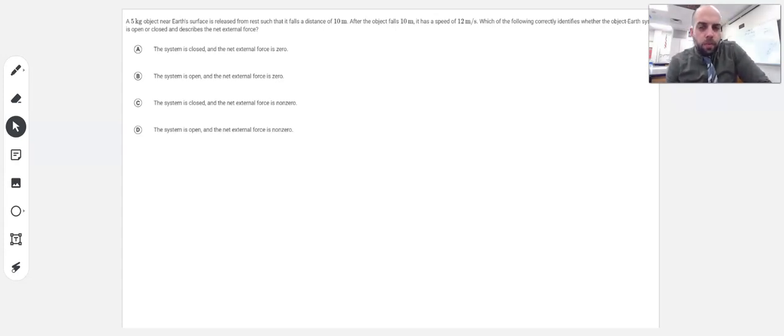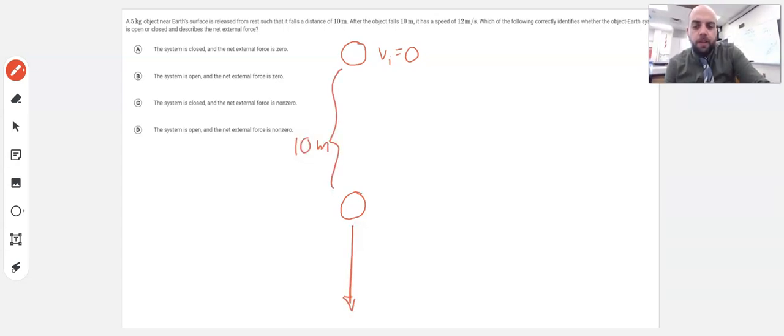So looking at this, when we're told an initial condition in the system, we've got this five kilogram object, it's going to be this ball, and it's released from rest. So the initial velocity equals zero. And then later on, we're told that after it falls 10 meters down, it has a speed of 12 meters per second.